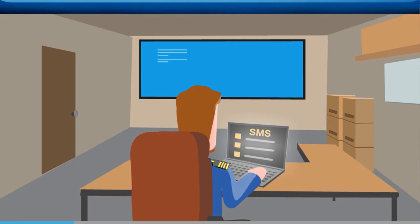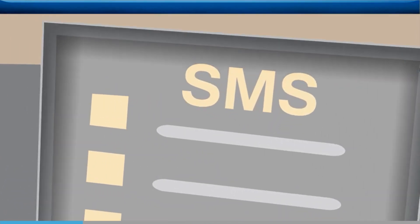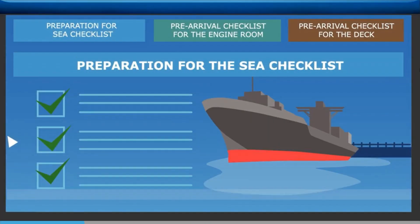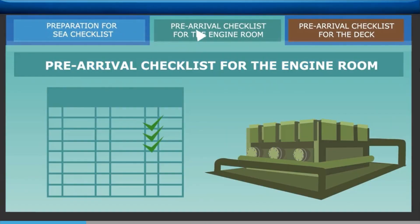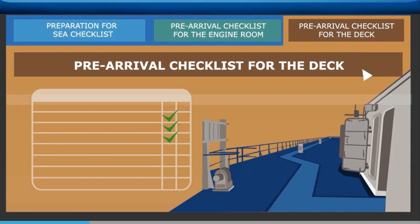A checklist is a written memo to accomplish a series of tasks. It is not a substitute for knowledge of the ship or procedures. Examples include the preparation for sea checklist, the pre-arrival checklist for the engine room, and the pre-arrival checklist for the deck.